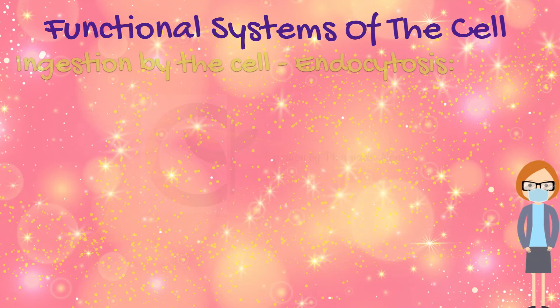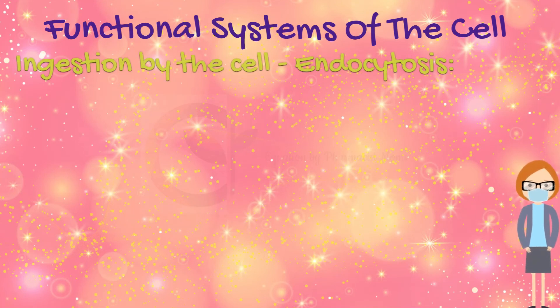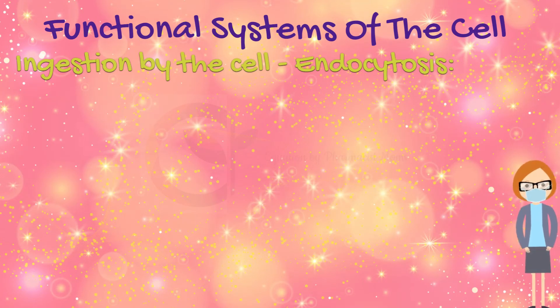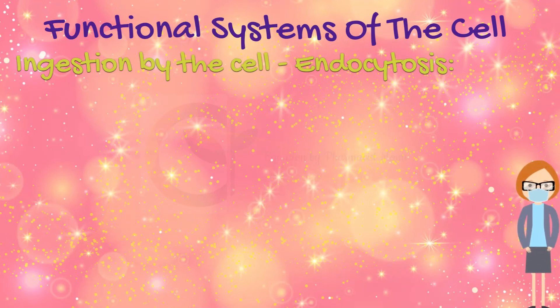What are the functional systems of the cell? The cell obtains nutrients and other substances from the surrounding fluid through the cell membrane via diffusion and active transport. Very large particles enter the cell via endocytosis, the principal forms of which are pinocytosis and phagocytosis.